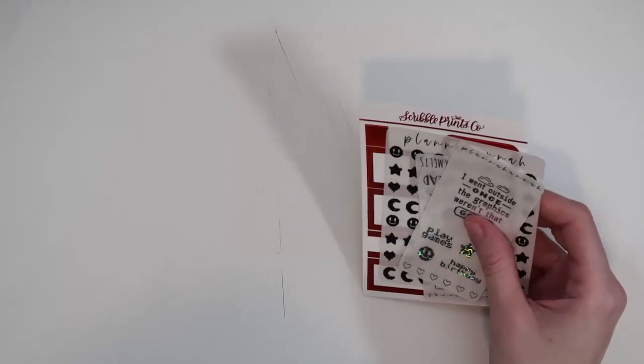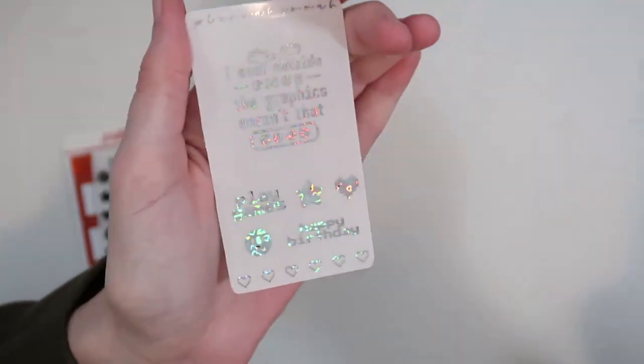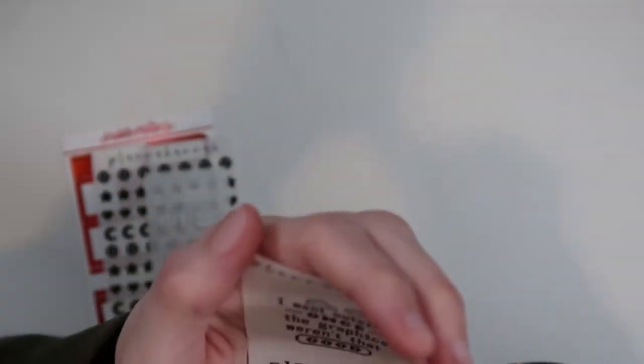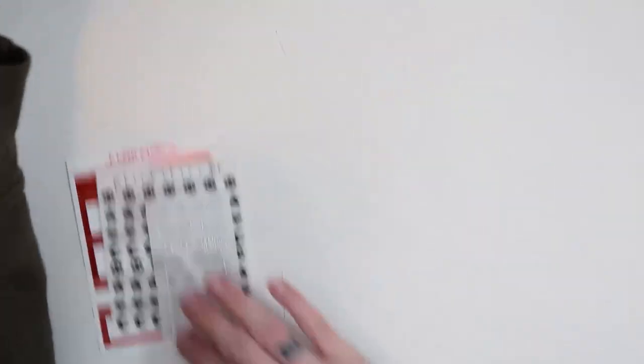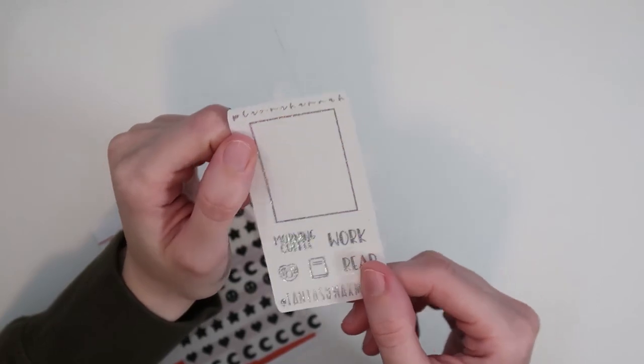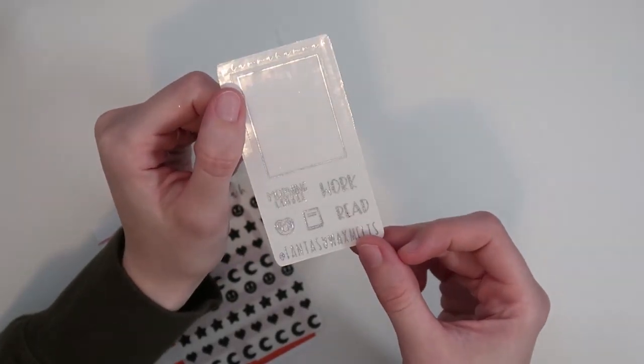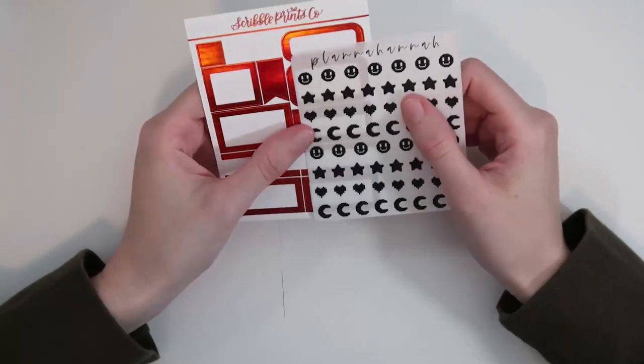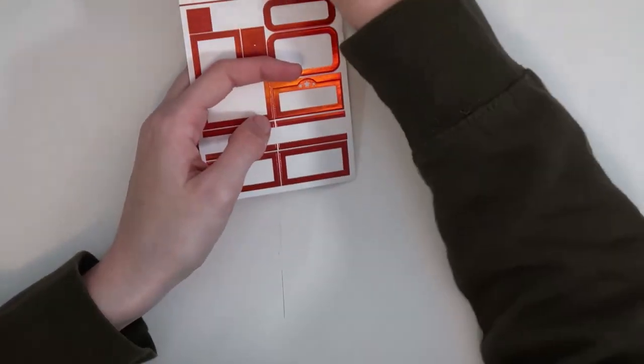Here's the journaling card in that order. So this one has my old freebie. This was the March freebie because it was Chris's birthday. This is in her sparkly pixie holo. It says, I went outside once. The graphics weren't that good. You have some scripts, play games, happy birthday, which that's actually perfect. A star, a heart, a smiley face, all in like pixelated and then a pixelated heart deco.